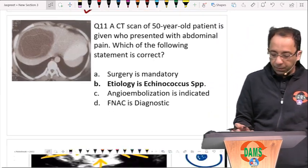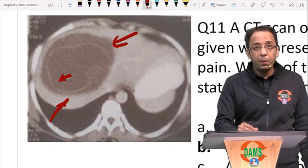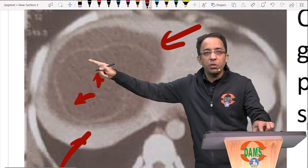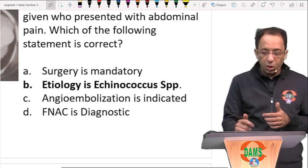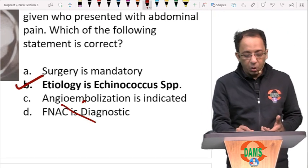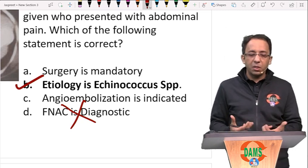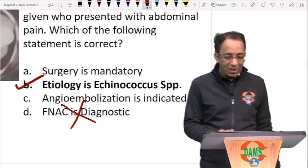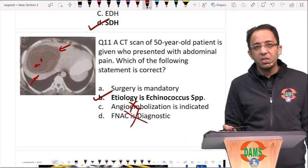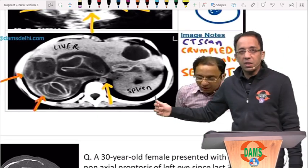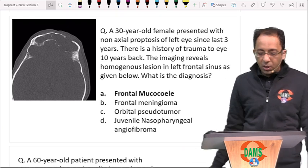A 50-year-old man with a CT showing a liver cystic lesion with a crumpled membrane inside. If you see a membrane inside a cyst, that indicates a parasitic cyst — the parasite is Echinococcus (hydatid). FNAC would not be diagnostic and is contraindicated here: puncturing it can lead to anaphylactic reaction. The hydatid cyst must be removed in total. If you see a cyst with a crumpled membrane inside — think hydatid.